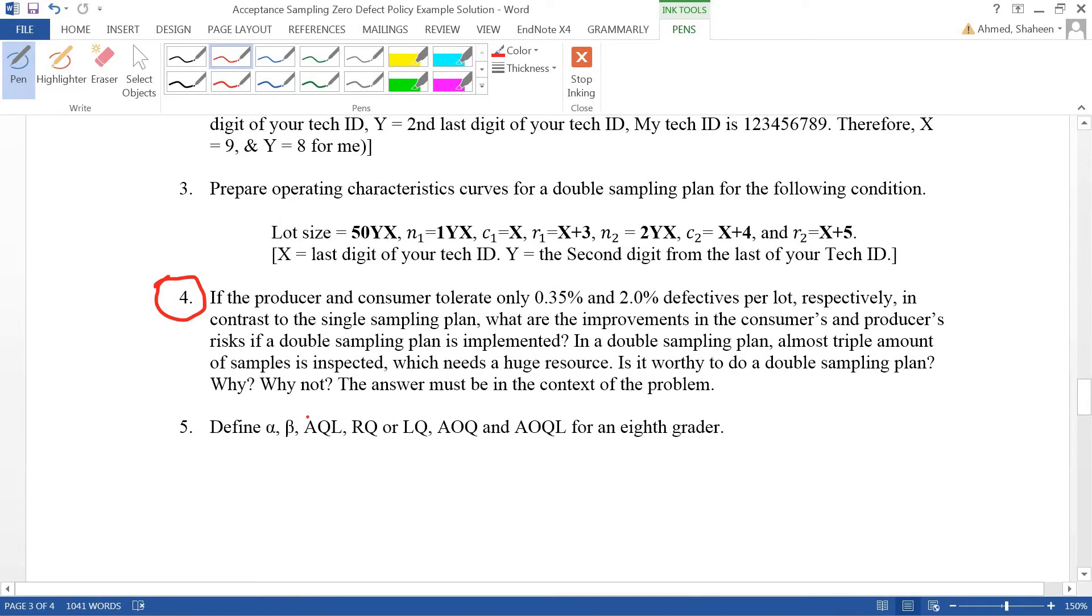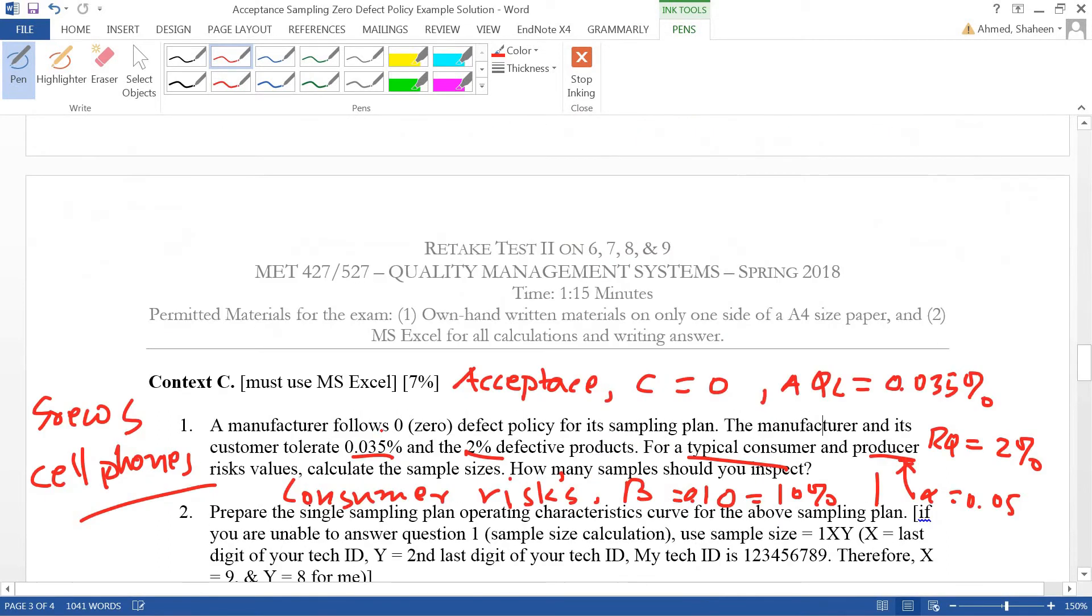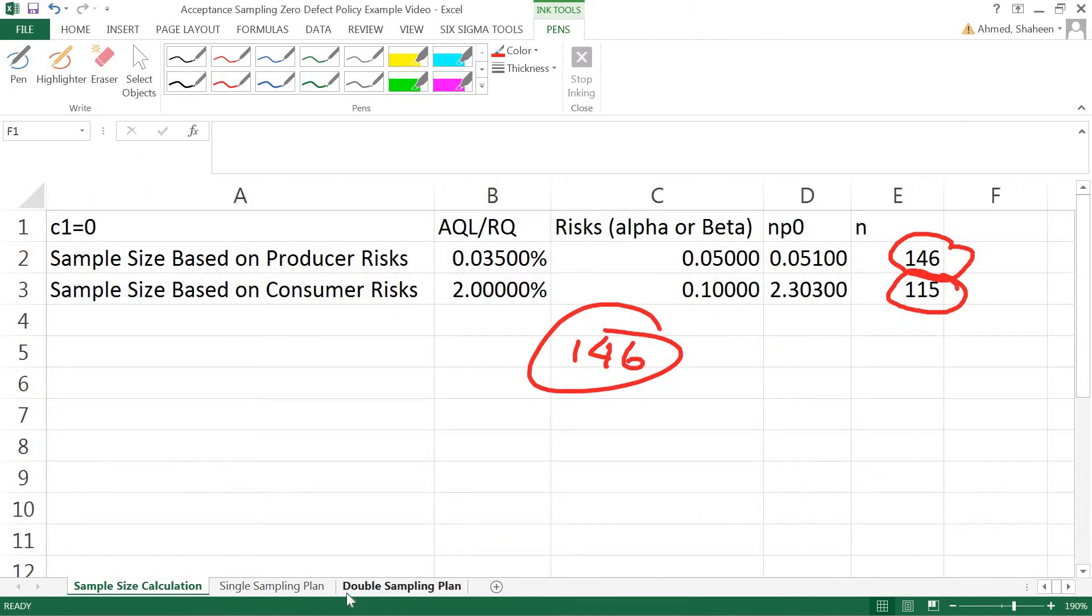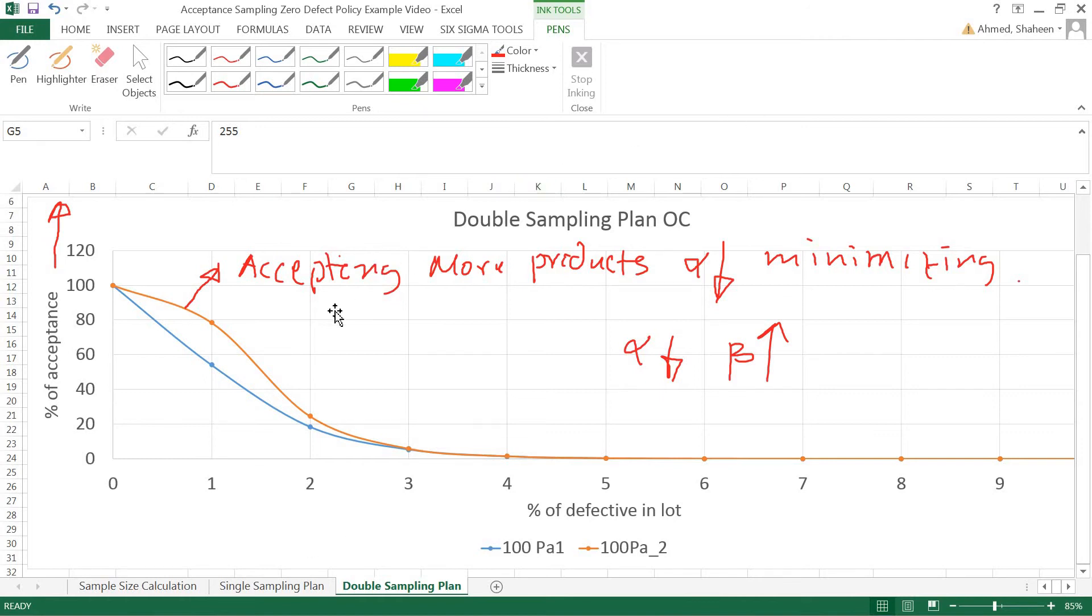If you go back to the problem, it gives you the tolerance values. The AQL value, the acceptable quality limit which is associated with alpha, is given as 0.035 percent. Alpha is 0.05. If you look at this AQL value line, this is the 95 line. Your alpha value was about 0.05, but now your values went down to maybe three percent, so your alpha reduced to 0.03 percent.